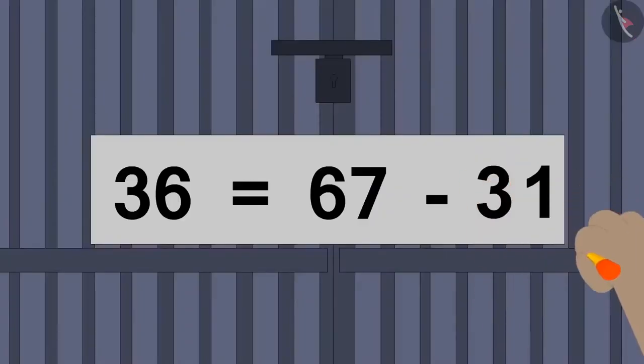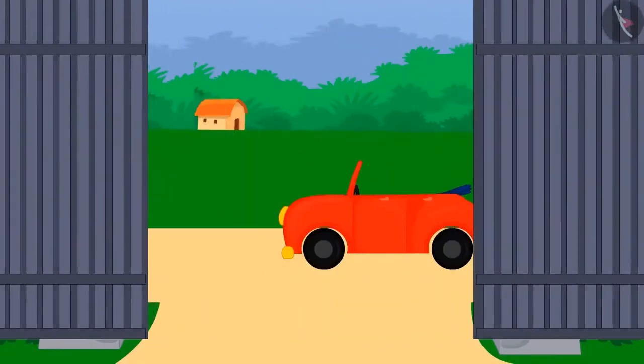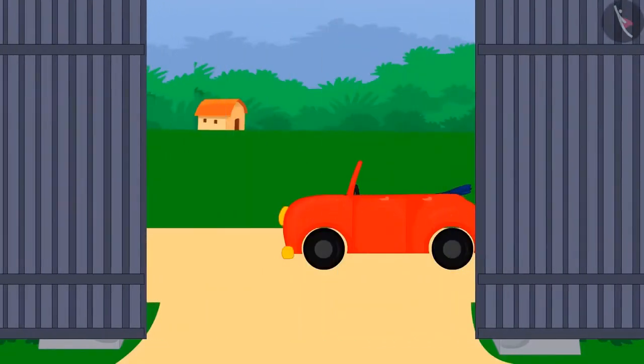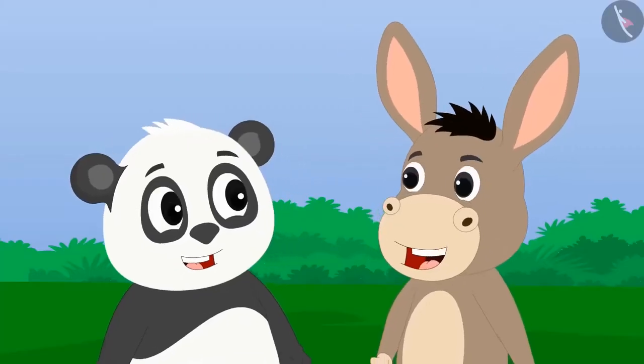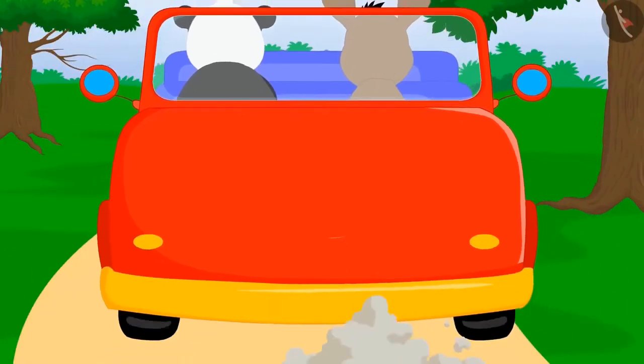Bola wrote the number 31 in the blank space. As soon as the gate opened, there appeared a shining car in front of Golu and Bola. They sat in the car and returned home happily.